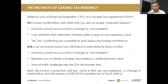The DTA tiebreaker test is essentially an elimination test. The first thing they look at is where you have a permanent home available. For example, in a DTA with the UAE, if you have a permanent home available there and you don't have one in South Africa — you've sold everything — then you would be seen as a non-resident for that year of assessment. It's an annual challenge based on personal circumstances.